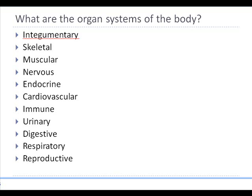Within the different organs that we have in the body, the different organs then work together at the next level of organization, which is called the organ systems. You will spend considerable time in the next two classes, Bio 201 and 202, to understand each of these systems. For example, the integumentary system is actually one of the largest systems that we have.